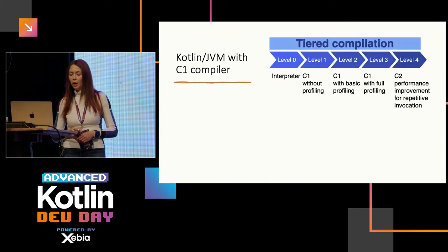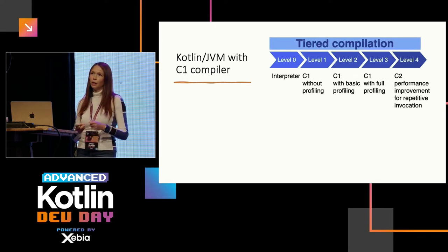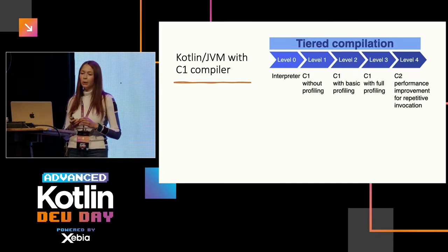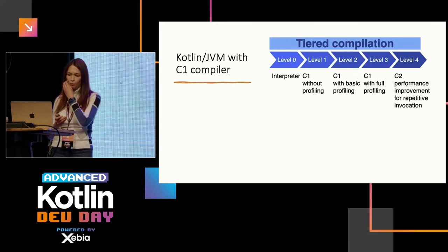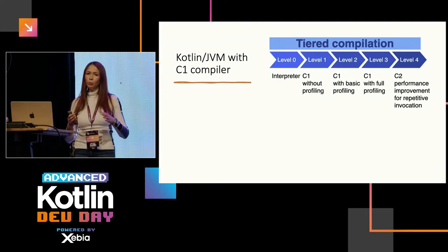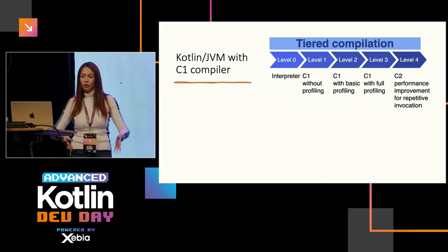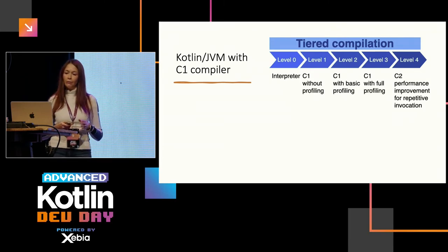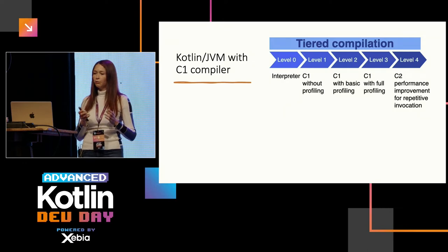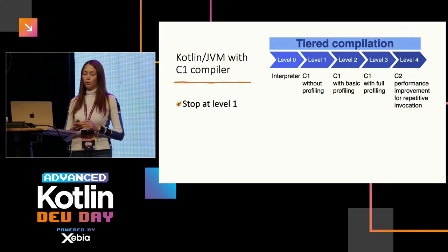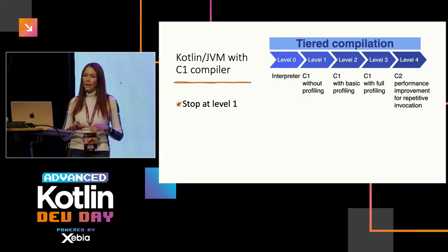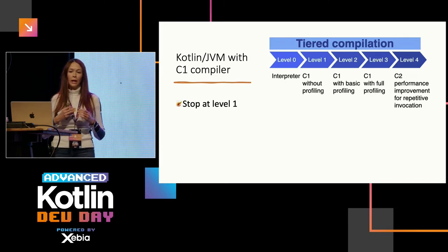One Lambda deployed. Now, if we have spiky load, it may be better to improve our startup time. What happens is that when we compile our code at startup — the cold start — it goes through tiered compilation: level zero is the interpreter, and level one is the first stage of compilation. This is where we want to stop.